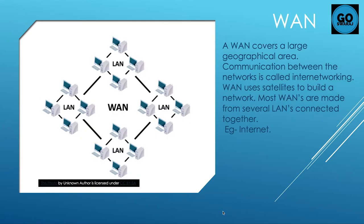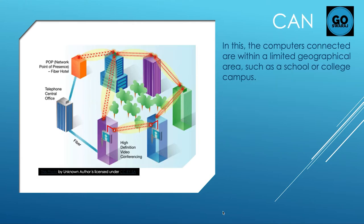WAN covers a large geographical area. Communication between networks is called internetworking. WAN uses satellites to build a network. Most WANs are made from several LANs connected together. Example: the internet.